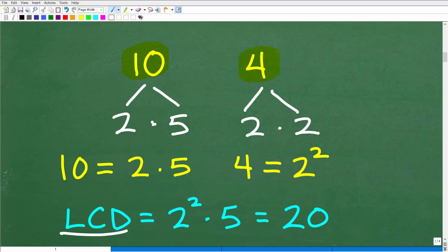These are factors of 10: 2 and 5, but they're also prime factors. We want to keep going until we run into prime numbers. So 10 equals 2 times 5. These are the prime factors of 10.